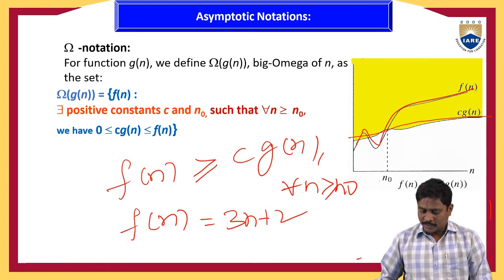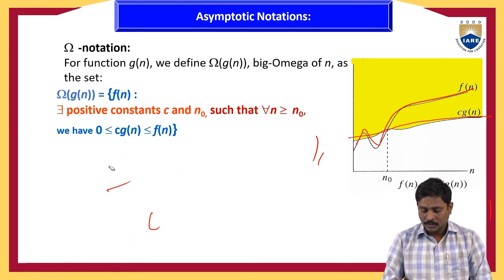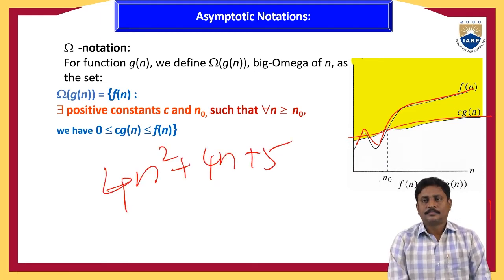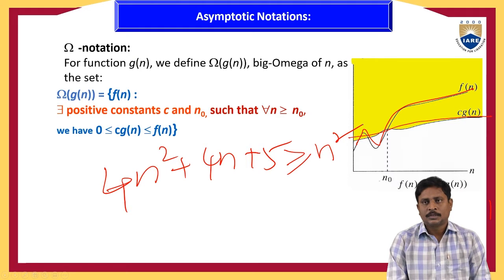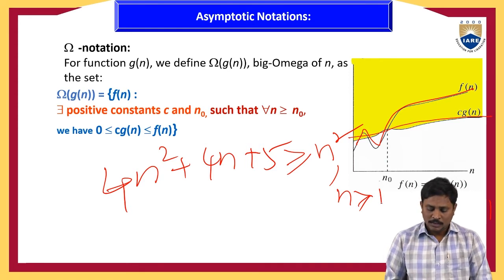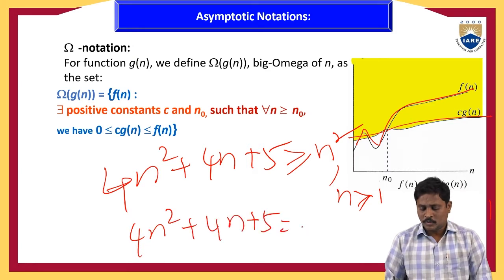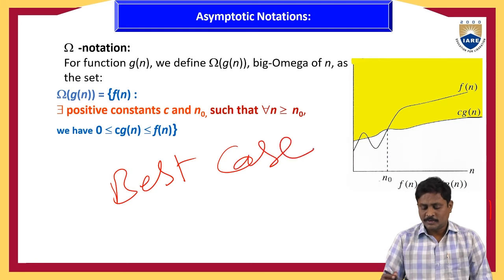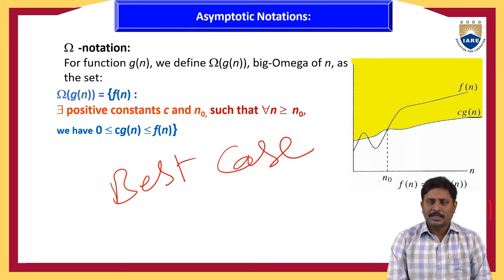Another example: 4n² + 4n + 5 is always greater than or equal to n². Substituting n = 1, 2, 3 and so on, for n ≥ 1 this condition is satisfied. So we write 4n² + 4n + 5 as Ω(n). This omega notation is used to represent best case time complexity.